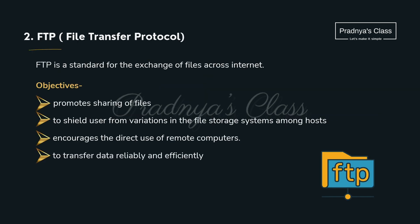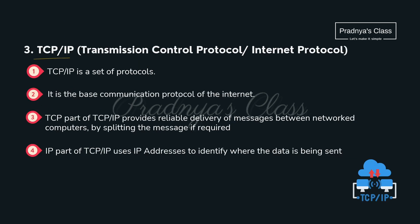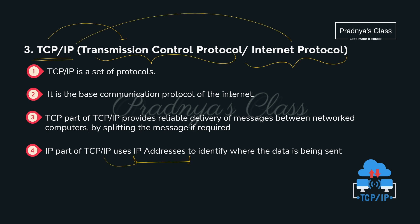The second protocol is FTP — File Transfer Protocol — used for exchanging files across the internet. The third important protocol is TCP/IP: TCP means Transmission Control Protocol and IP means Internet Protocol. IP addresses are used to identify the target computer over the network where we are sending the data, and TCP provides reliable delivery of messages.